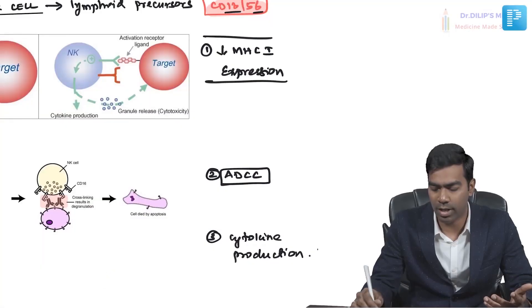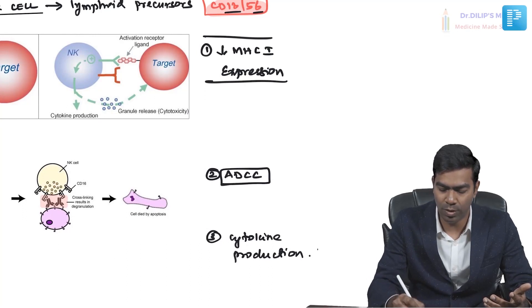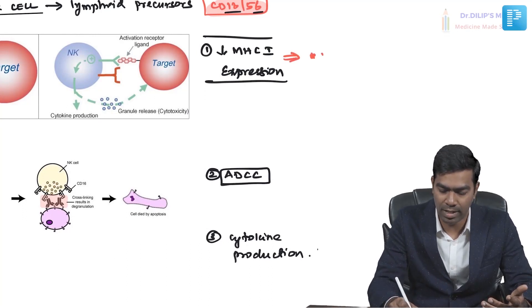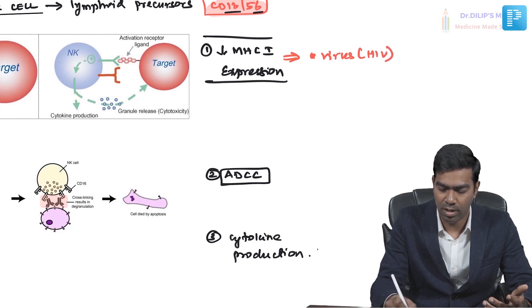Cells with reduced MHC class 1 expression are very important to identify, because whenever a cell has reduced MHC class 1 expression it indicates either a virus-infected cell like HIV, or it could be a tumor cell.